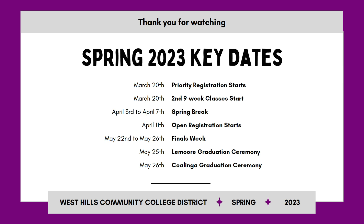And that is the process for registering for classes using our newly redesigned student portal. Priority registration for the 2023-2024 academic year starts on March 20th and open registration starts April 11th. If you need any help registering, reach out to the Golden Eagle Admissions and Records Team at 559-925-3317 or the Falcon Admissions and Records Team at 559-934-2000. Have a great rest of your semester.